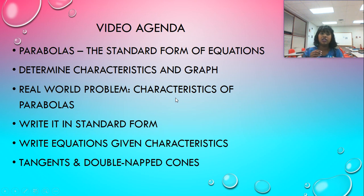So that I can determine characteristics, graph, and so on. What if I am given just the characteristics? Can I write the equation back and potentially graph? And finally, what the heck is a tangent and a double-knaped cone?